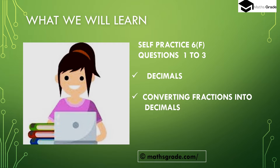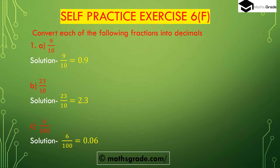Today we will solve self-practice exercise questions 1, 2, 3 of self-practice 6F of chapter 6 — Decimals. The topic is converting fractions into decimals. Question number 1: convert each of the following fractions into decimals. Part a: 9 divided by 10. The denominator is 10, which has only one zero, so we place one digit after the decimal point. The answer is 0.9.